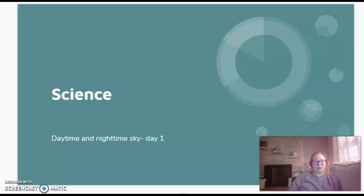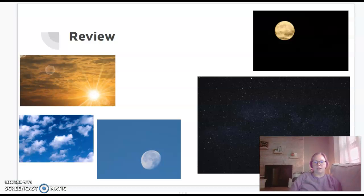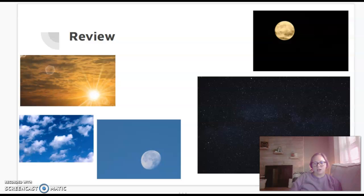For science today we're going to do a bit of review. It's been a little while since we've done science — we've been doing social studies for two weeks now. We're going to switch back to science and I just want to take some time to review what we were learning. We were talking about the daytime sky and the nighttime sky, and you guys made observations about things you see during the daytime and the nighttime sky. So what I want to do today is just go over some of those things.